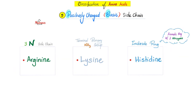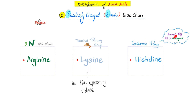Group number five: the positively charged — these are basic. Basic with positive, positive with basic. Examples: arginine, lysine, histidine. Arginine has three nitrogens. Lysine has a terminal primary amino group, NH3. We have great stories about lysine coming up next. And histidine has an imidazole ring — an aromatic ring with two nitrogens, not three. To remember that arginine has three nitrogens, you can say it's R-threenine.